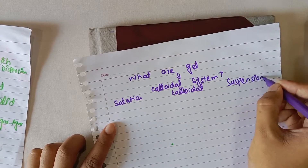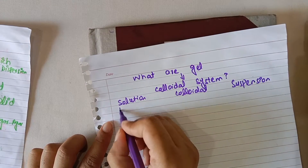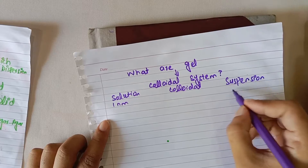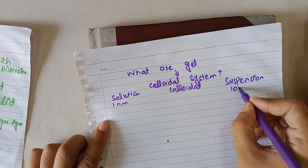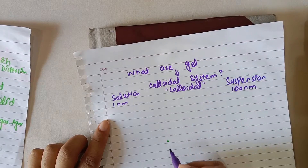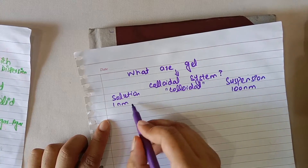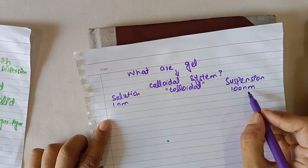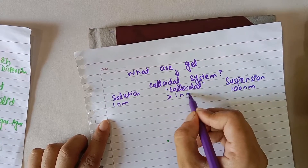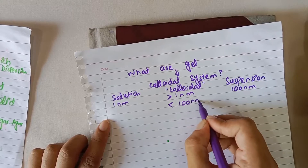If we look at the size of their particles, solutions have a particle size of around 1 nanometer, and that of suspension is around 100 nanometers. Colloids are those systems in which the size of the particle is between 1 nanometer and 100 nanometers — greater than 1 nanometer and less than 100 nanometers.